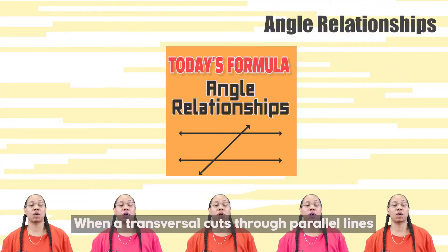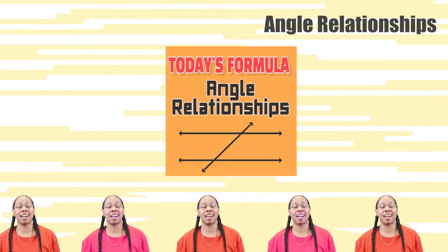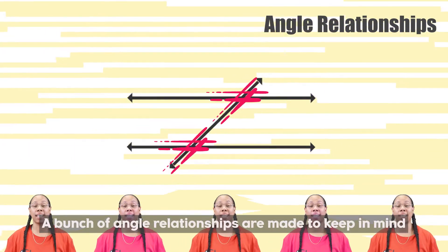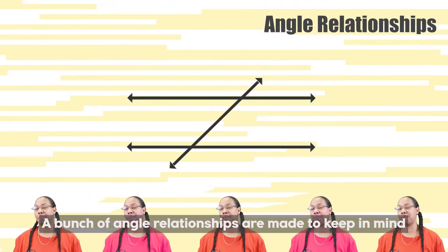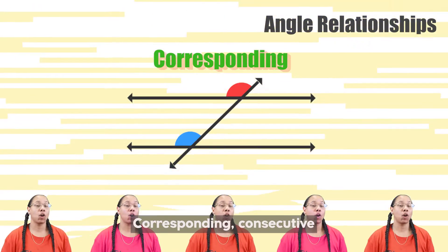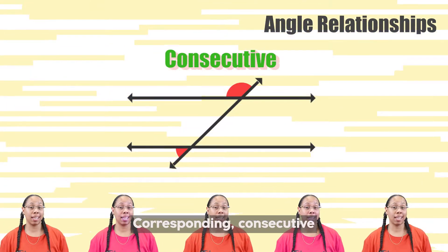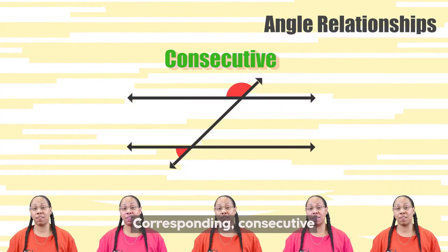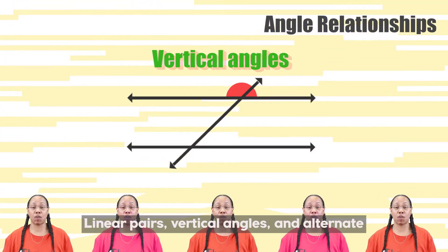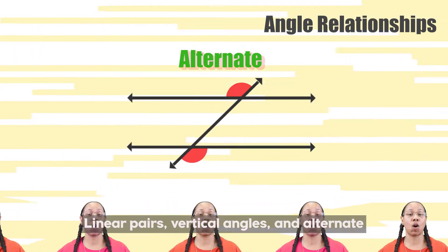When the transversal cuts through parallel lines, a bunch of angle relationships are made to keep in mind: corresponding, consecutive, linear pairs, vertical angles, and alternate.